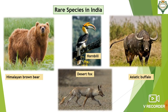Rare species includes species with a small population. That means these animals and birds are found in India, but in very small numbers. They might move into the endangered or vulnerable category if the right measures are not taken. For example, Himalayan brown bear, hornbill, desert fox, Asiatic buffalo, etc.